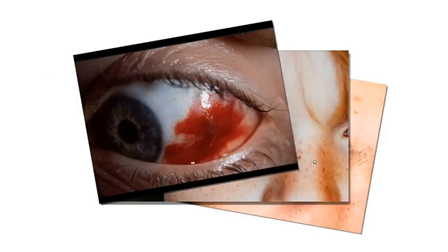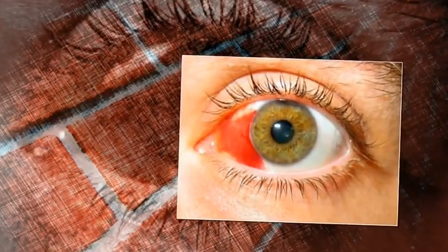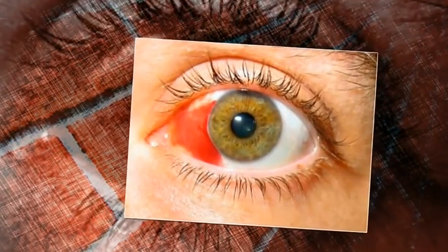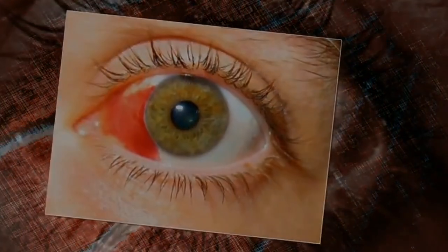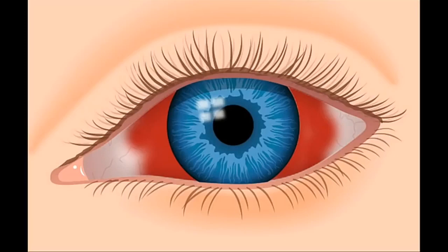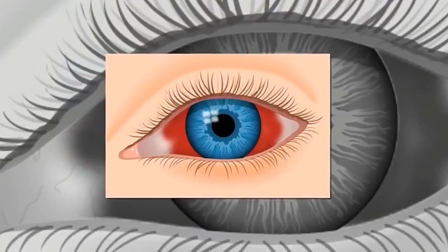The most common hemorrhages occur in the sclera, the white portion of the eye under the clear membrane. Numerous tiny blood vessels beneath this membrane, called the conjunctiva, are so fragile they can break easily under slight pressure. An instance of bleeding in the sclera beneath the conjunctiva is called a subconjunctival eye hemorrhage.